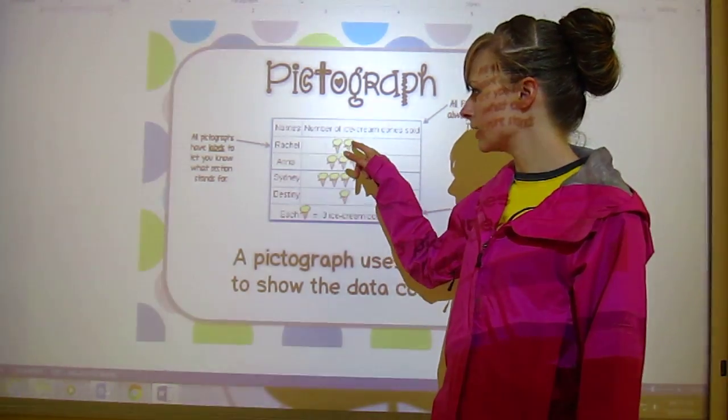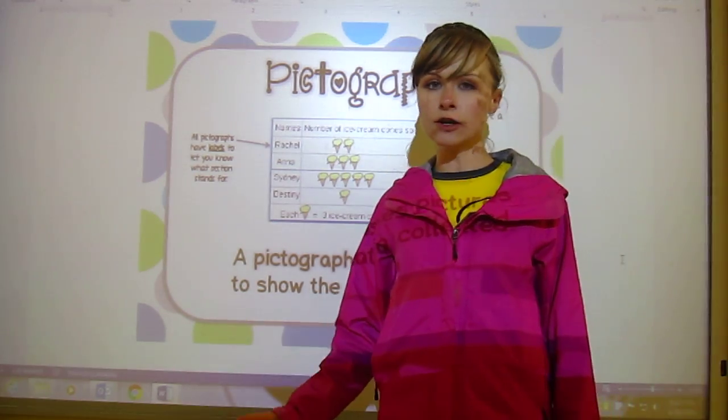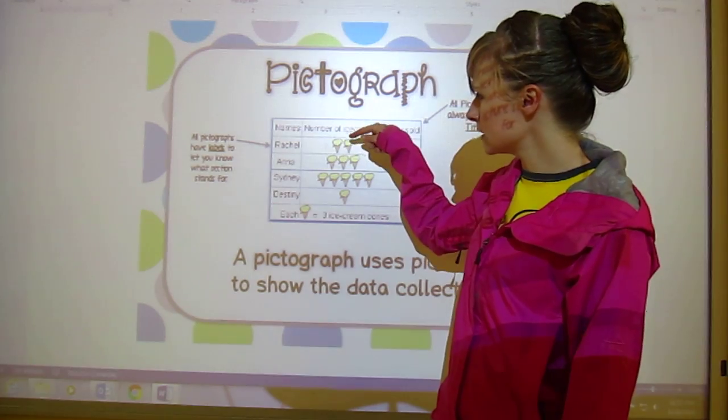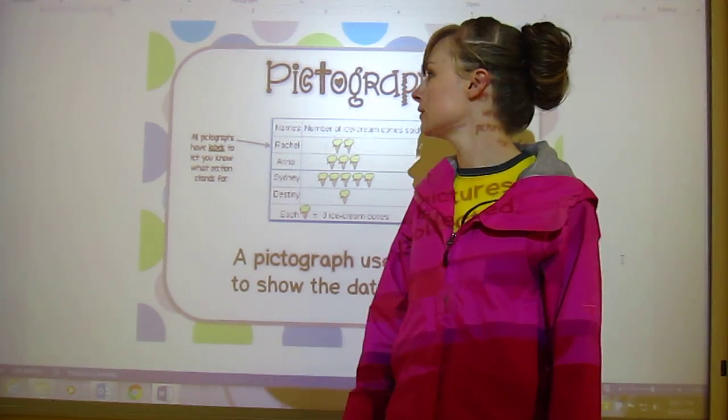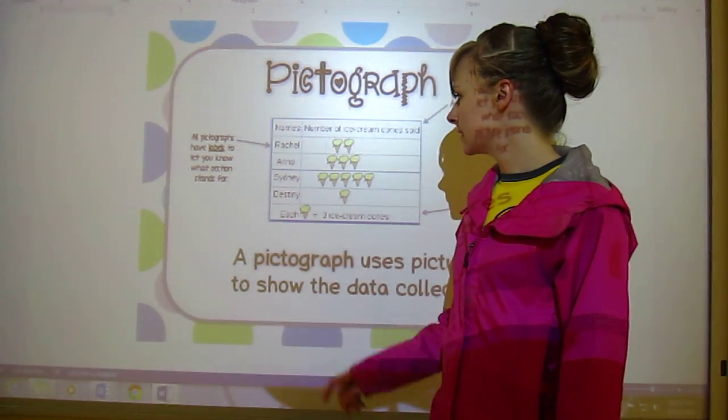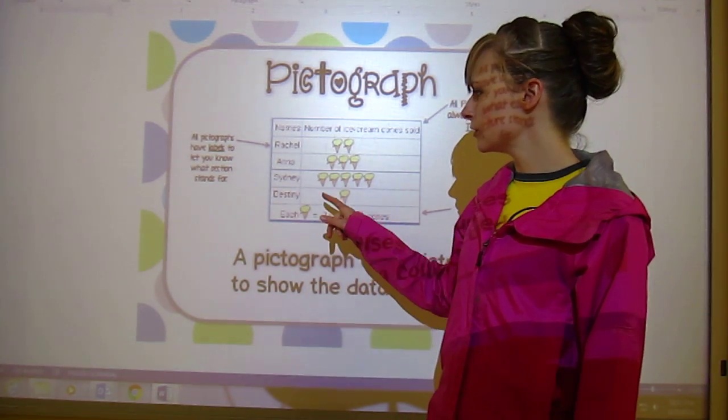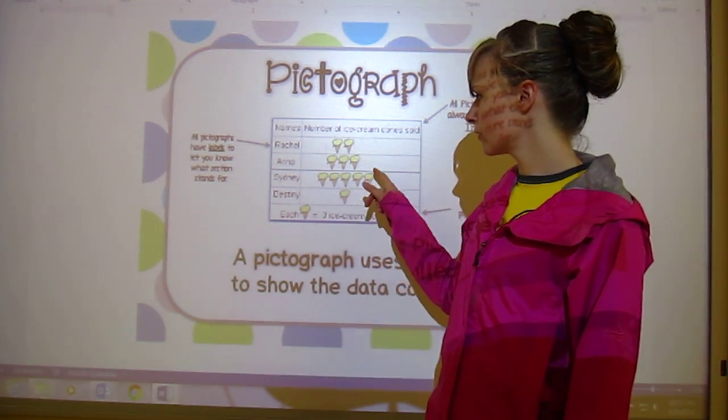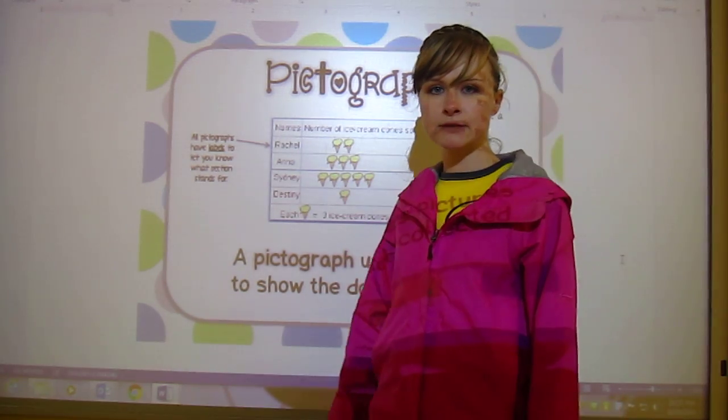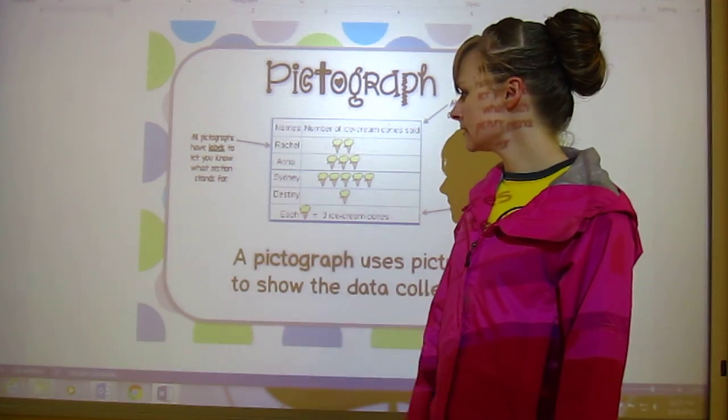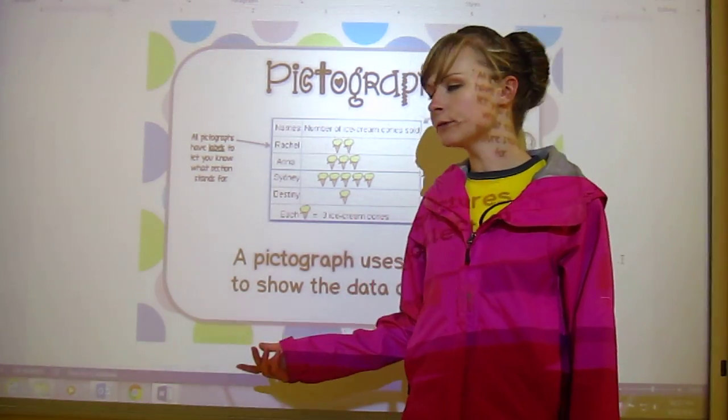So that means that Rachel has one, two ice cream cones on her chart but each one of these ice cream cones is worth three, so that means there's three, six. Rachel sold six ice cream cones. Anna would have sold nine ice cream cones. You can use your multiplication, one, two, three, four, five. Sydney, five times three, could have sold fifteen ice cream cones. And then Destiny, she only sold three ice cream cones.